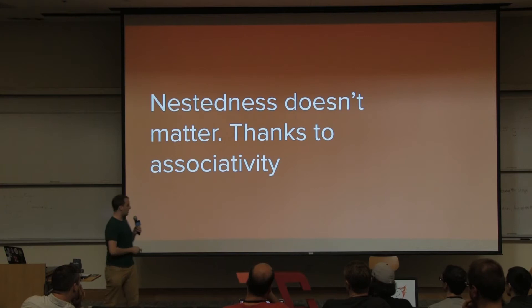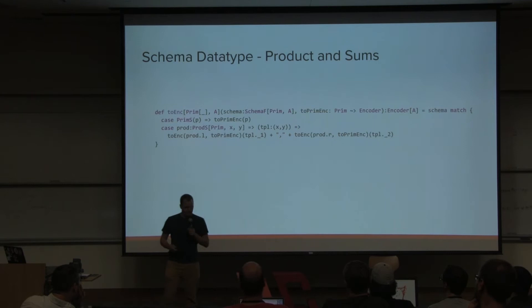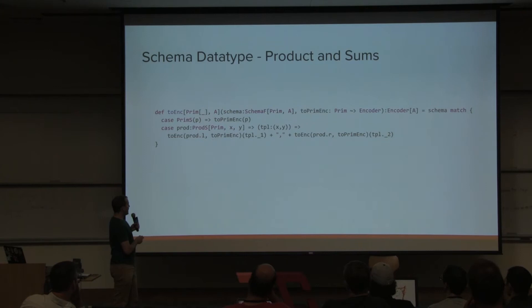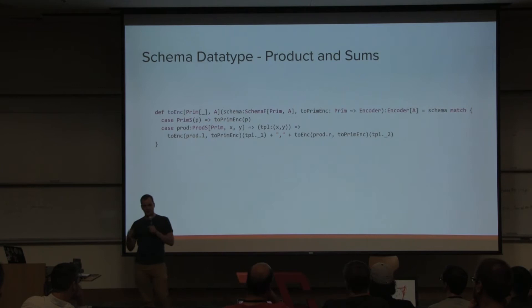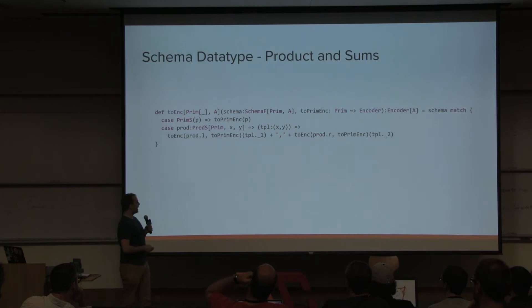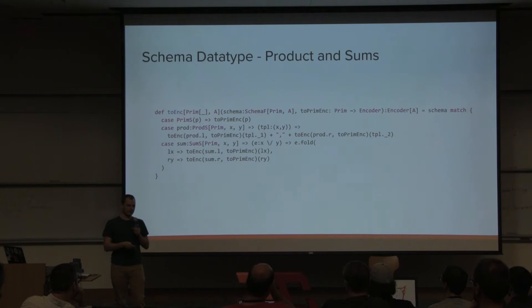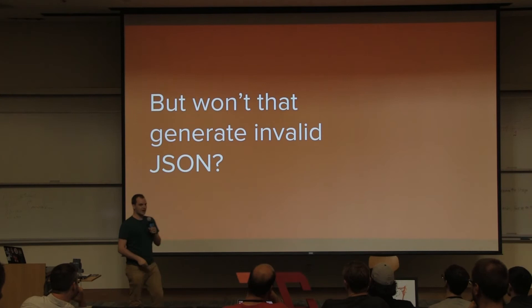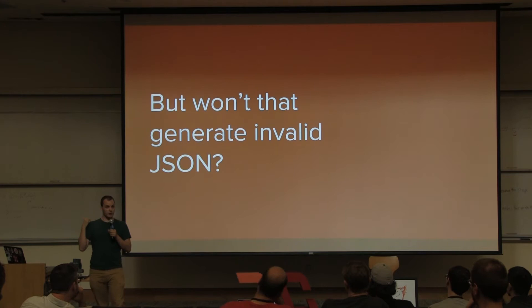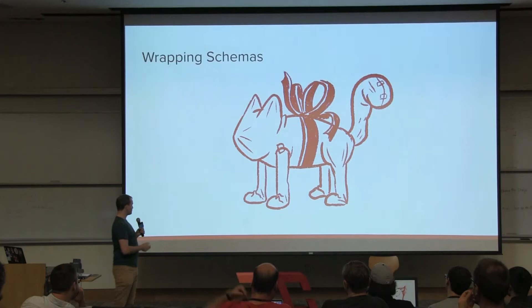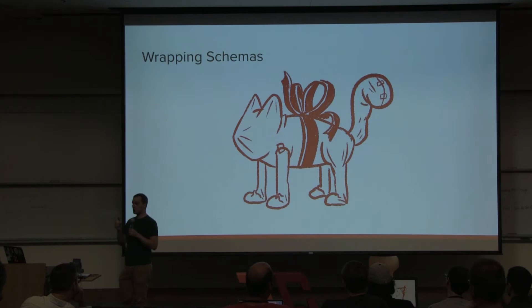For the toEncoder function in the product case, we get a product where X and Y are the left and right-hand side types. Scala's compiler is smart enough to realize A equals the tuple of X and Y. We take the respective tuple parts, recursively call toEncoder on each, put a comma in between for JSON fields, and we're done. Sums work the same way except it's an Either, so we dispatch to the correct side. You'll note this can produce invalid JSON — something we'll correct in a successive round.